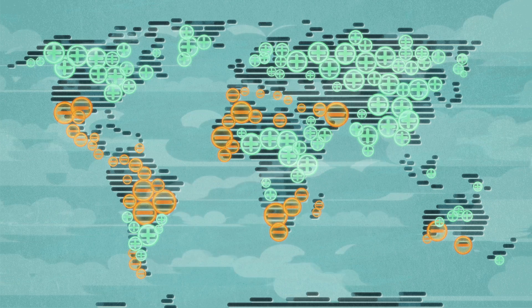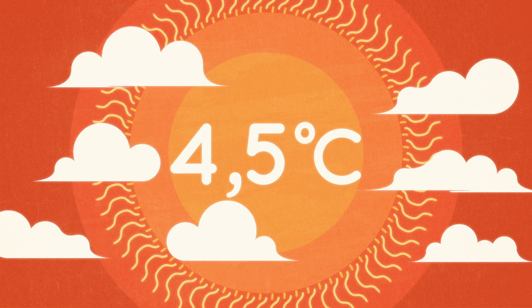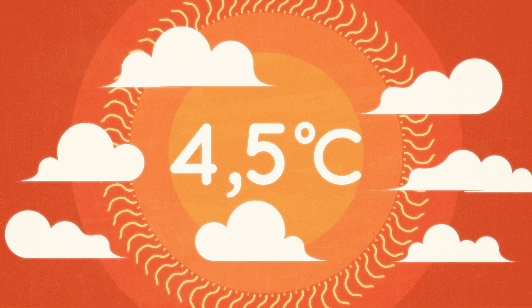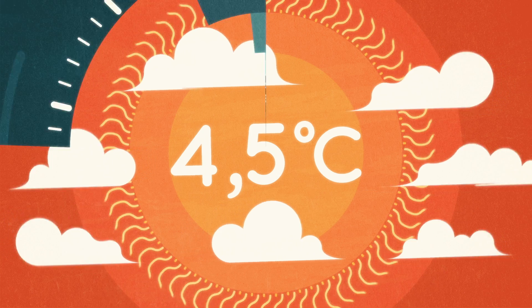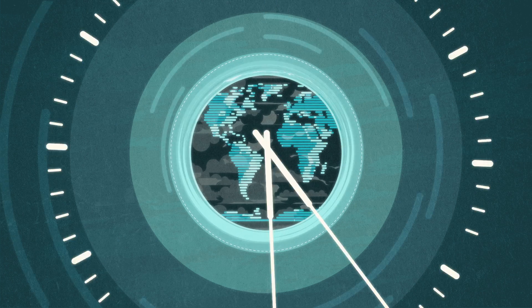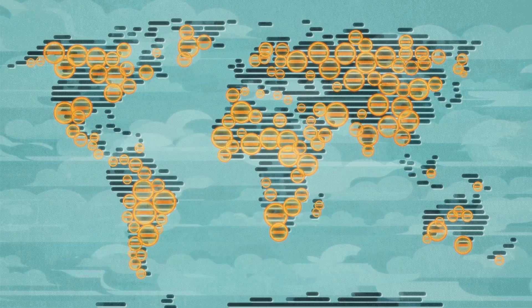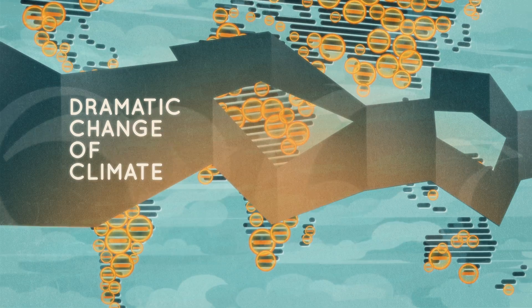On the other hand, a rise of 4.5 degrees Celsius would be similar in magnitude to the warming that's occurred since the last glacial maximum, 22,000 years ago, when most of North America was under an ice sheet two kilometres thick. So that would represent a dramatic change of climate.